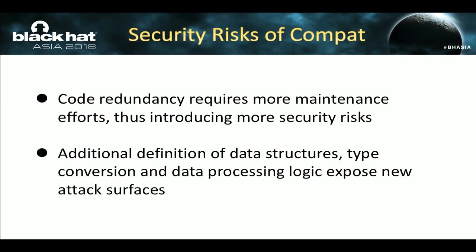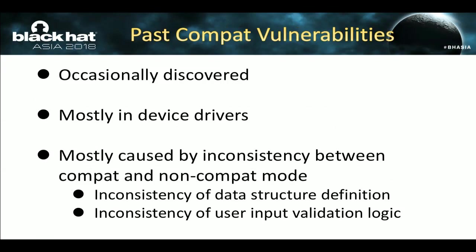From this example we can notice some potential security risks of compat code. The first security risk is code redundancy. Code redundancy is common in many compat mode system call implementations in the Linux kernel, meaning two similar copies of code and data structures need to be maintained. This maintenance effort introduces more security risks. Furthermore, compared to original 64-bit system calls, their compat counterparts usually have additional data structure definitions, additional type conversions, and additional data processing logic, which expose new attack surfaces to user mode processes.